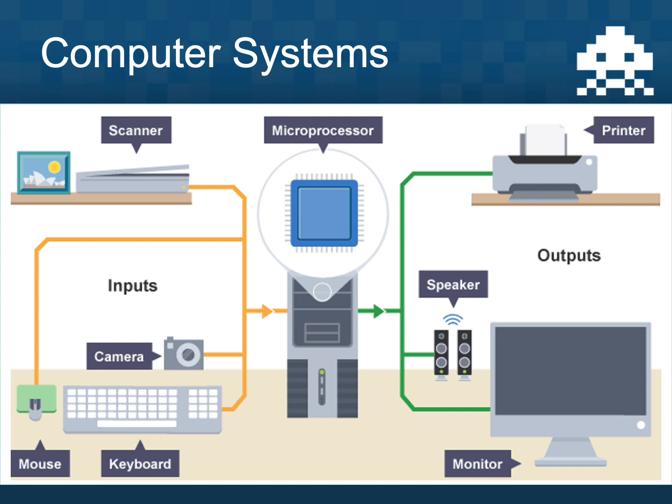Here you can see a number of different examples of how that input, process, and output cycle works. On the input side we've got things like a scanner, a camera, a mouse, and a keyboard. A scanner can put documents into a computer, a camera can put pictures into a computer, a keyboard can take in letters, and a mouse can take in movement.